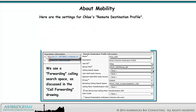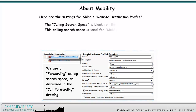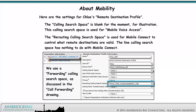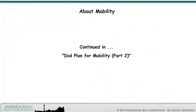Here are the settings for Chloe's remote destination profile. The calling search space is left blank for the moment for illustration — this calling search space is used for mobile voice access, which we'll talk about in another drawing. The rerouting calling search space is used for Mobile Connect to control what remote destinations are valid. The line calling search space has nothing to do with Mobile Connect. We use a forwarding calling search space as discussed in the call forwarding drawing. This playbook is continued in Dial Plan for Mobility Part 2, which discusses dialing from mobile devices.